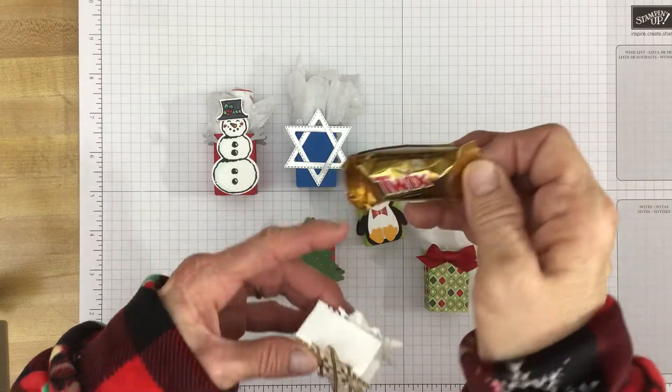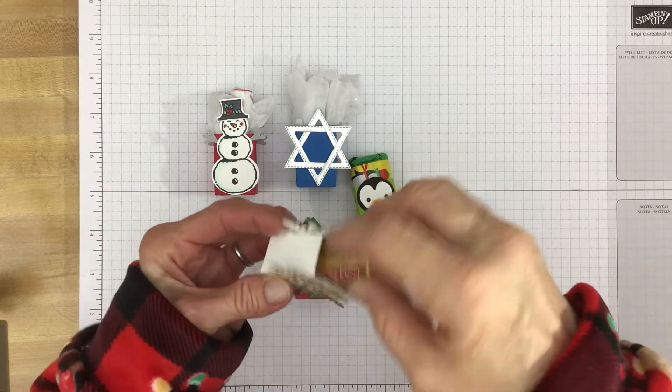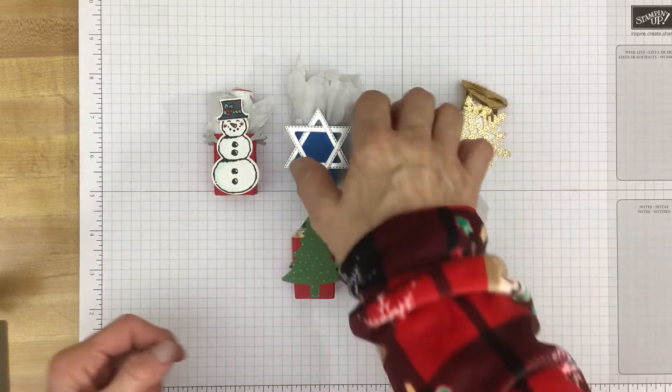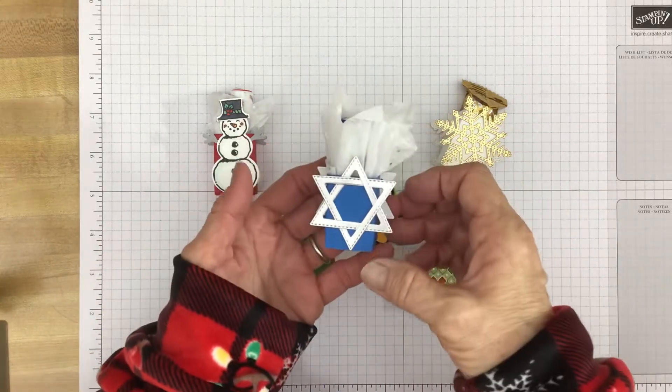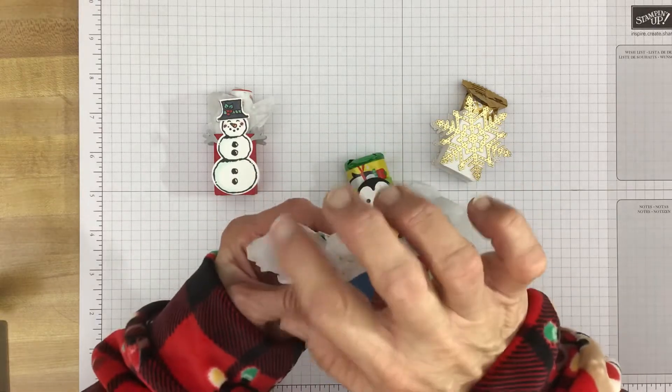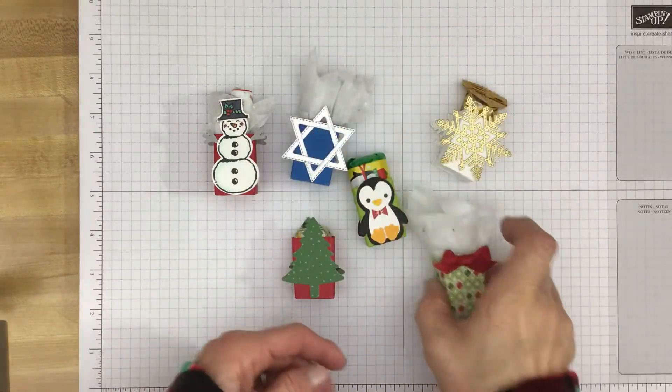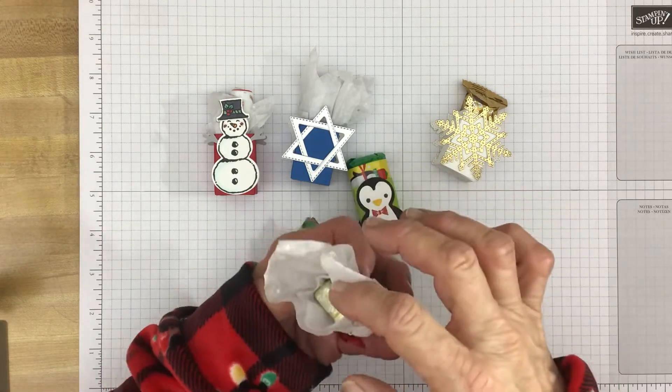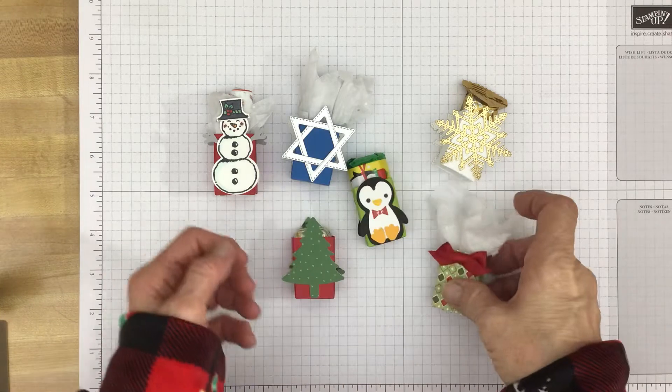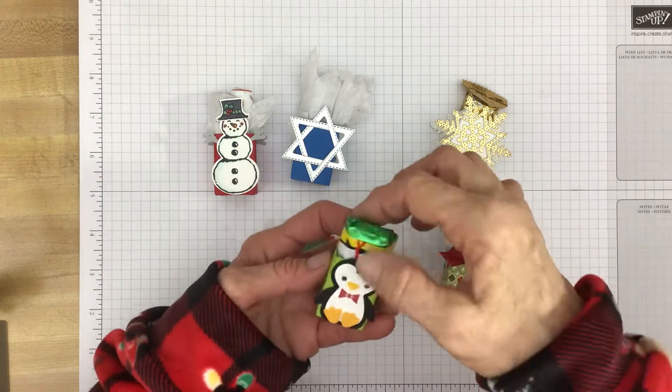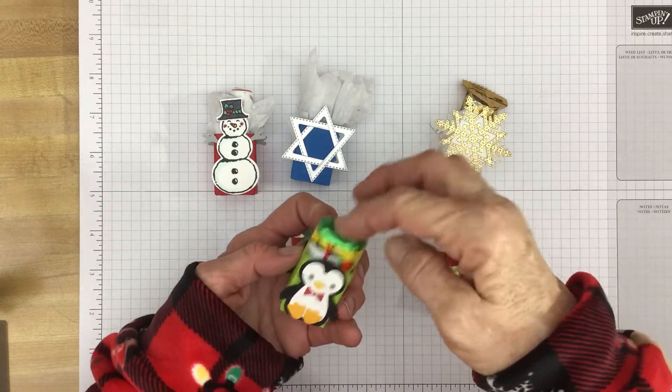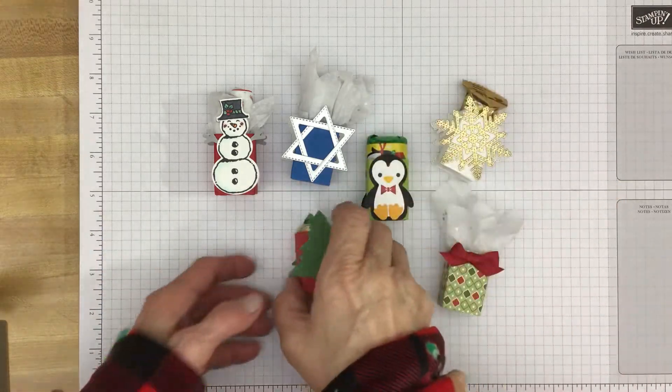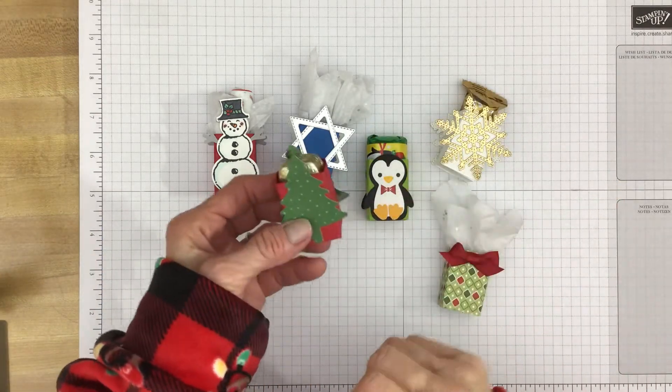This is the little Twix, the small ones, the minis. And they fit in there just perfectly. And also I made this one for Hanukkah and it has a lip balm. And this one I made is just a Christmassy one and it has a little dove chocolate inside. And the little penguin, like I said the little Hershey's miniatures too will fit in this just fine. And this one I believe has another little dove chocolate.